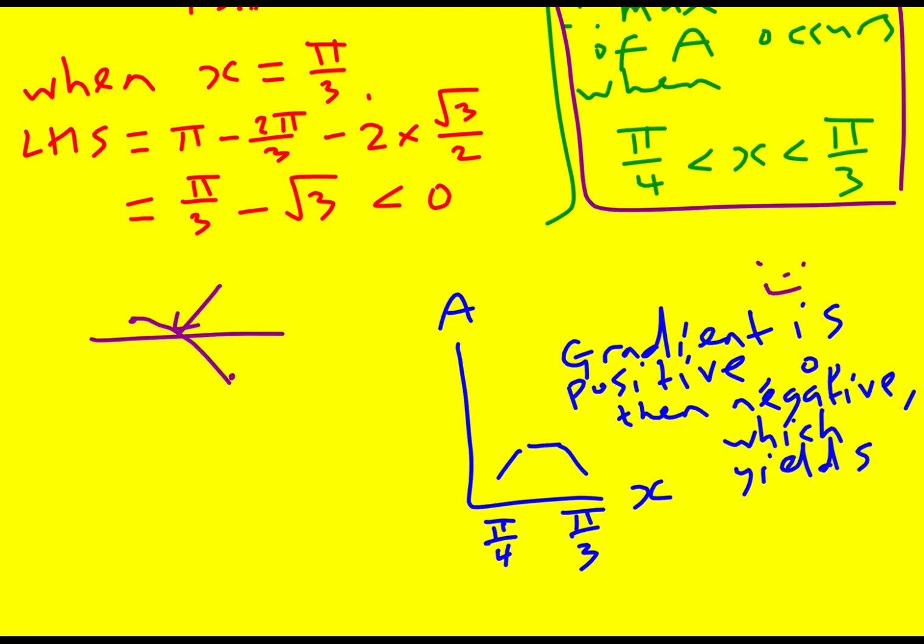This is what you typically do when the second derivative fails. If you get d²y by dx² equaling zero, then you have to look at the gradient either side of the maximum. But in this case, we already have the gradient either side of the maximum. So we don't need to do the second derivative. We can just look at this. Positive gradient, then zero, then negative, which yields a maximum. So that should be in there to be completely conclusive.